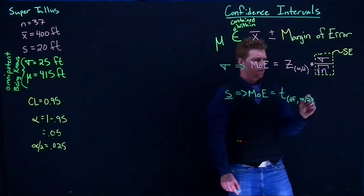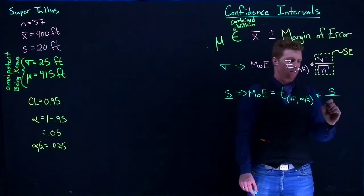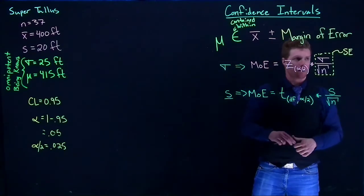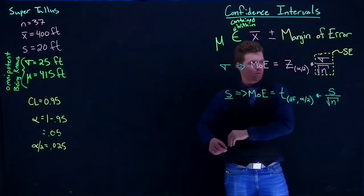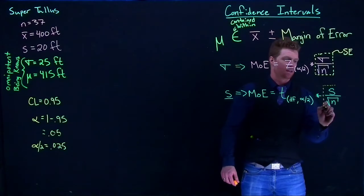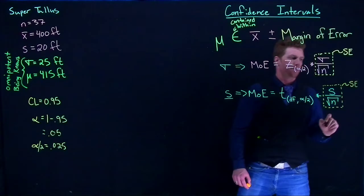And then what we do is we just multiply by S divided by the square root of N. And we're still just going to call this the standard error.